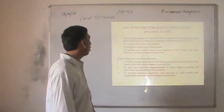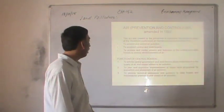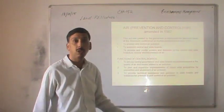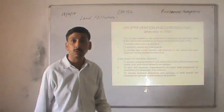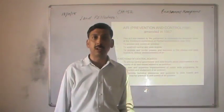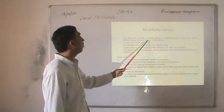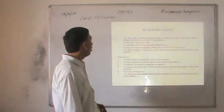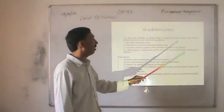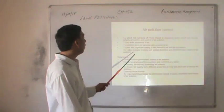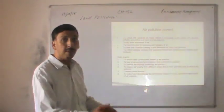Functions of the central board under the Air Act include: to advise the central government and state boards on improvement in the quality of air and issues related to air pollution; to plan and supervise implementation of nationwide programs for prevention and abatement of air pollution; to provide technical assistance and guidance to state boards; to utilize the services of mass media in educating the public; to lay down standards for air quality; to establish laboratories for sampling and analysis of air; to plan and organize training of persons in the field of air pollution; and to collect samples and perform statistical analysis relating to air pollution.